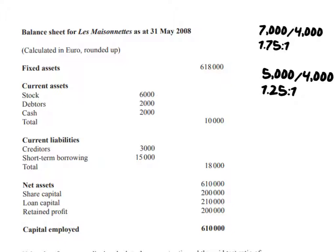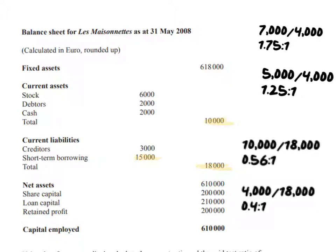Looking at the 2008 balance sheet, differences are immediately apparent. Short-term borrowing is now 15,000 euros — a significant increase that will have a massive impact on liquidity. Current assets are actually lower than current liabilities, which suggests they are not going to be liquid. While current assets have in fact increased since 2005, the issue is clearly the short-term borrowing.